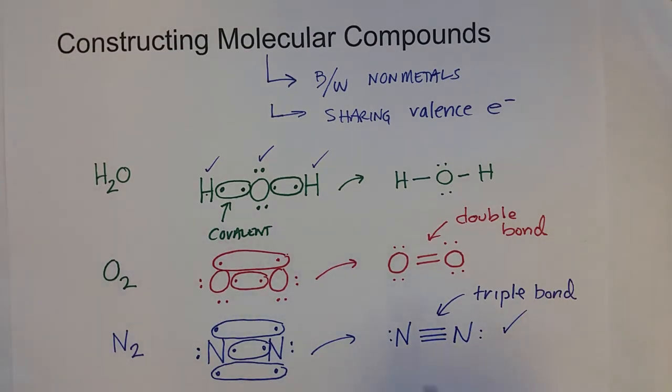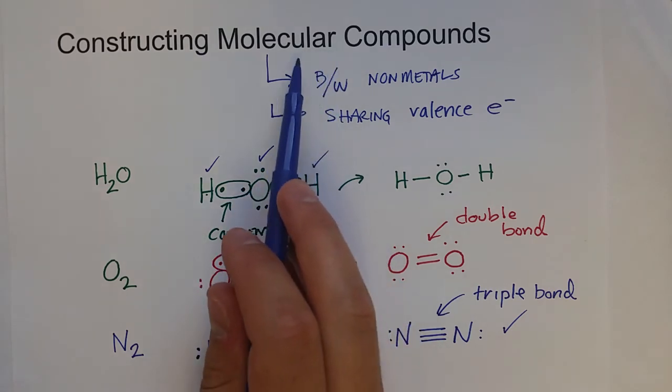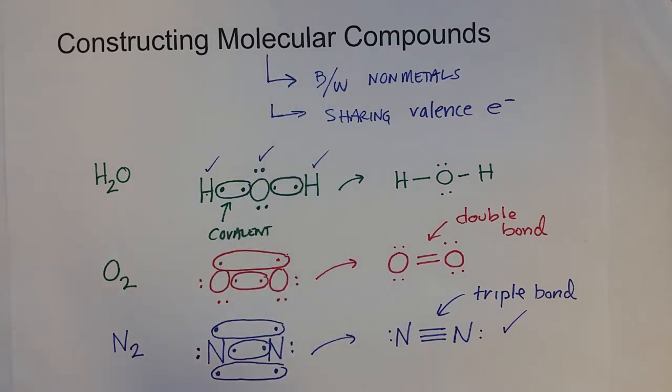When we are trying to figure out the formulas for molecules, it's not a question of the charge. It's more of a question of how many bonds does each atom need to form to get to the octet rule, to have a stable electron configuration just like the noble gases.